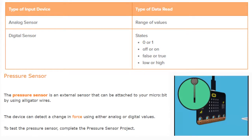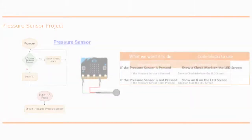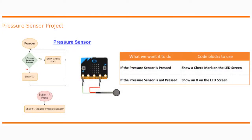To test the pressure sensor, you must complete the pressure sensor project. For this project, we're going to be using a forever loop since we want our program to continuously check if that pressure sensor is being pressed. What we want our program to do is: if the pressure sensor is being pressed, simply show a check mark on our LED screen; if the pressure sensor is not pressed, show an X.